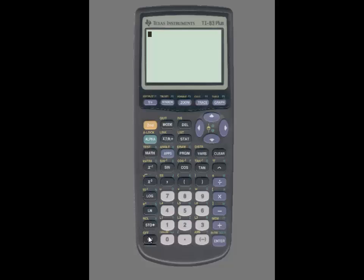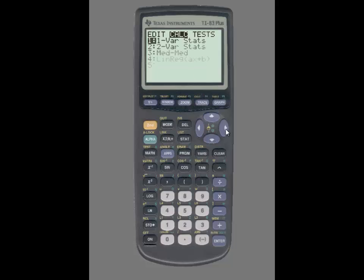To use the calculator, first you are going to press the STAT key, then use the right arrow key to highlight TESTS. Next, you are going to select number 4, which is the two-sample t-test. I am going to go over this function first and then I will go over the two-sample t-interval a little later.